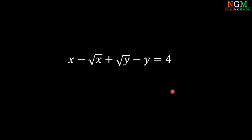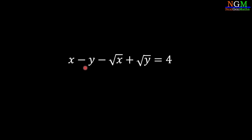In the next step, we put like terms together — x with y and root x with root y — giving us x minus y minus root x plus root y equals 4.